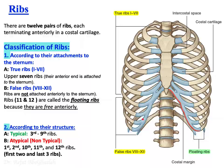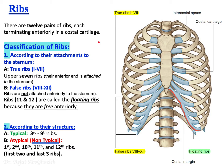Now to the ribs. We mentioned the thoracic cage is formed anteriorly by the sternum and costal cartilage, and laterally by the ribs. We have 12 pairs of ribs — 12 on the right and 12 on the left, totaling 24 ribs. They terminate anteriorly in costal cartilage.